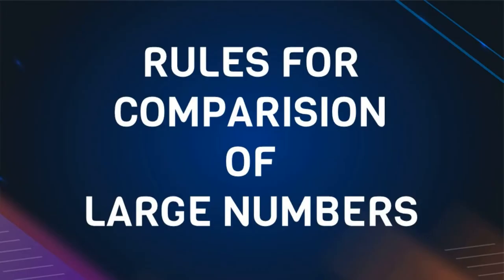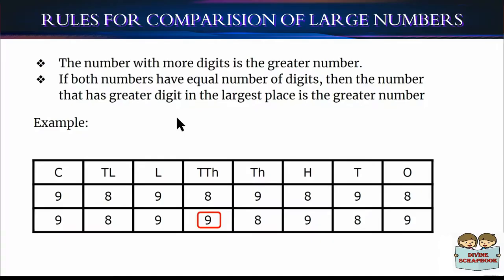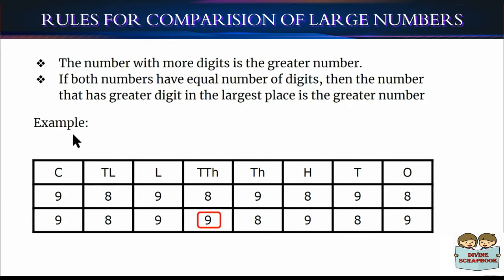Now we are going to learn rules for comparison of numbers. Rule 1: If both numbers have an equal number of digits, then the number that has a greater digit in the largest place is the greater number.